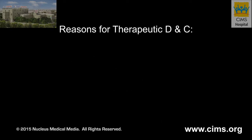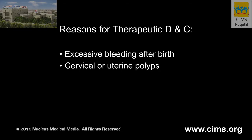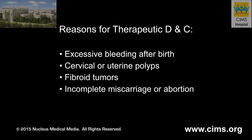A therapeutic D&C may be performed to treat certain uterine conditions, such as excessive bleeding after birth from remnants of the placenta, cervical or uterine polyps, fibroid tumors — which are benign tumors formed on the uterine wall — and incomplete miscarriage or abortion, in which parts of the embryo or fetus or associated tissues remain in the uterus.